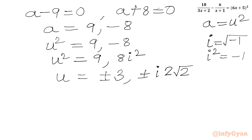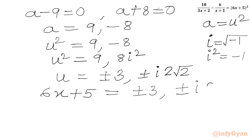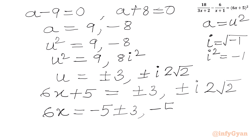Now u was our substitution for 6x + 5. So we write 6x + 5 = ±3 and 6x + 5 = ±2i√2. Subtracting 5 from both sides gives 6x = −5 ± 3 and 6x = −5 ± 2i√2.